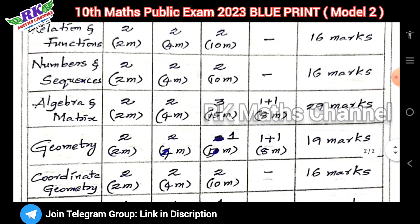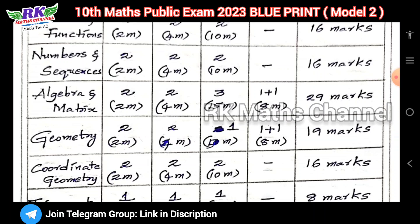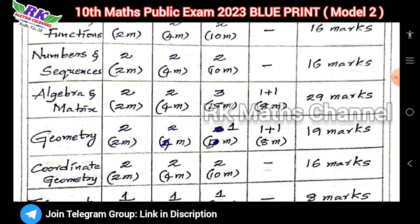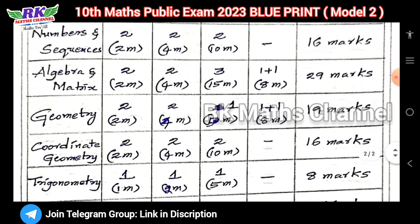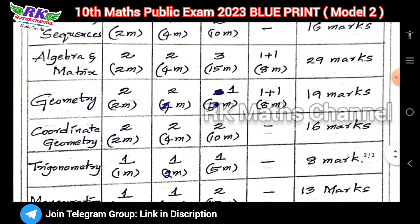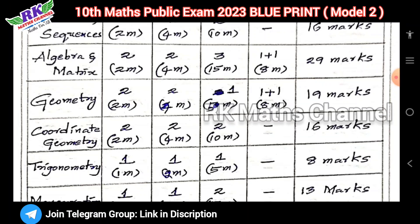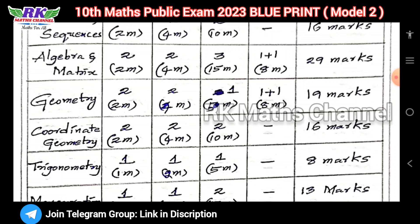Numbers and Sequences: 1-mark is 2, 2-marks is 2, and 5-marks is 2, so total 16 marks. Sometimes one district question of 5 marks is from Numbers and Sequences — that is 1 question. Algebra and Matrix: 1-mark is 2, 2-marks is 4, and 5-marks is 3 questions. Matrix is 1 question, Algebra is 2 questions. Graph of variation and quadratic graph is 1 plus 1, totalling 29 marks.